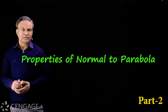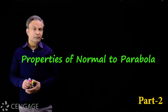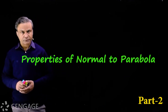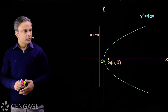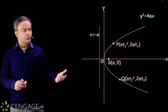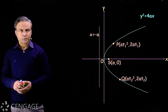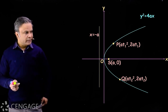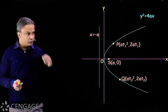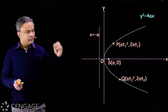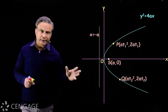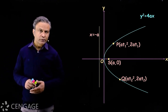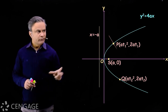We have one standard result for parabola y² = 4ax. We have the graph of this parabola with points P and Q on the parabola. The parameter of point P is t1 and that of Q is t2. Coordinates of point P are (at1², 2at1) and those of Q are (at2², 2at2).